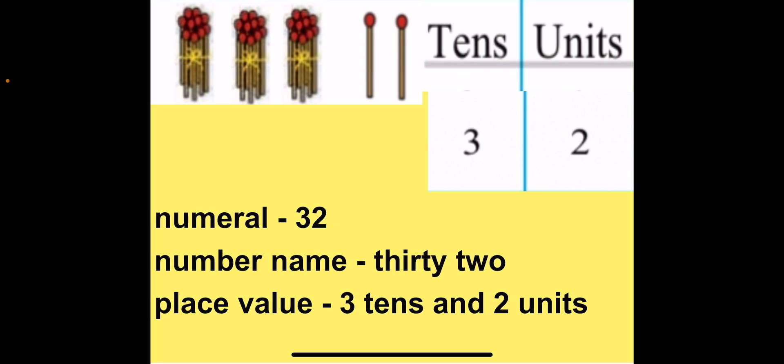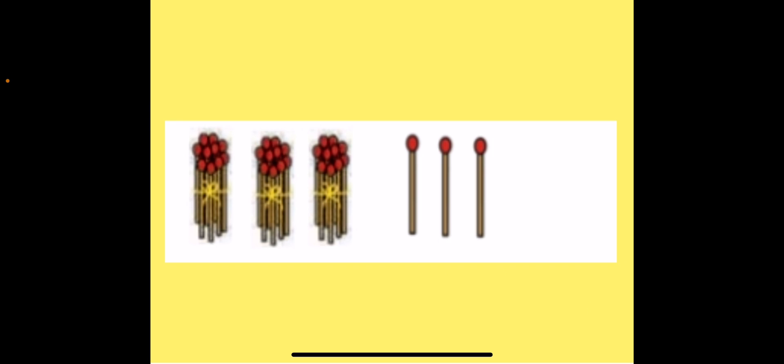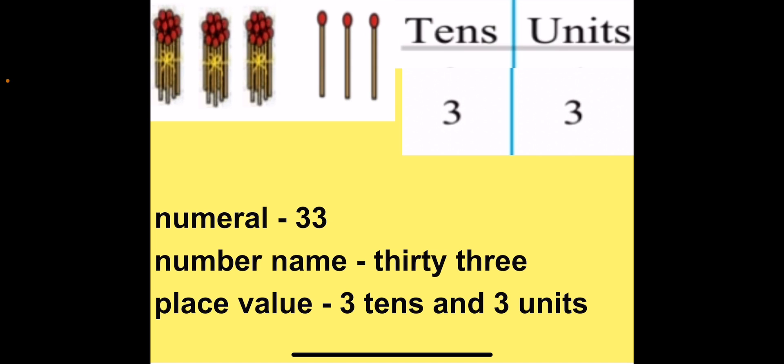Now when we add 1 more unit we get 3 tenths and 3 units, giving us our next number, that is 33. The number name for 33 is THIRTY-THREE. The place value for 33 is 3 tenths and 3 units. So the number after 32 is 33.